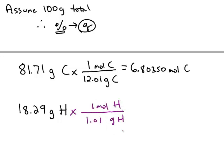So we do the same thing with hydrogen. 1.01 grams of hydrogen is the value from the periodic table. And so we get 18.1089 moles of hydrogen.